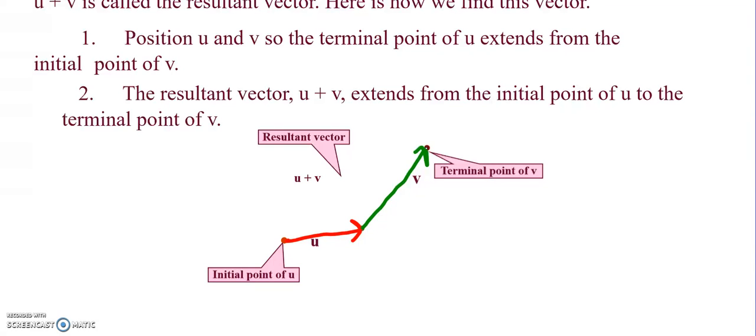So then the resultant vector u plus v extends from the initial point of u to the terminal point of v. So this is the resultant vector u plus v.